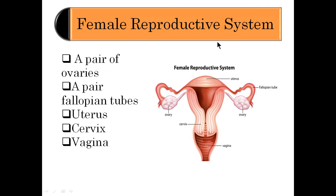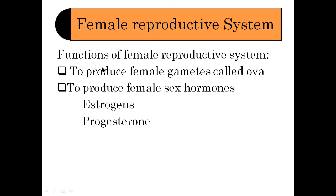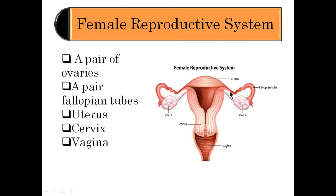The female reproductive system consists of a pair of ovaries, a pair of fallopian tubes (also known as oviducts), then the uterus which is a muscular bag, and then the vagina. The functions of the female reproductive system are to produce ova, which are produced by the ovaries, and to produce female sex hormones — estrogens and progesterone. The ova are produced by the ovaries and travel through the fallopian tubes, where fertilization with sperms takes place. The uterus is a muscular bag where the zygote is formed, and the cervix is the terminal portion of the uterus, leading into the vagina.